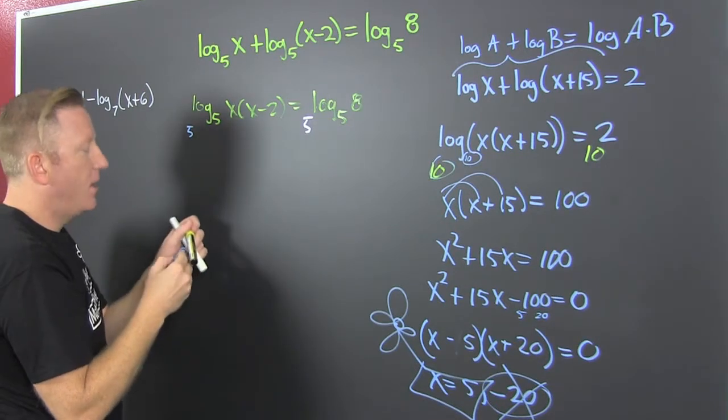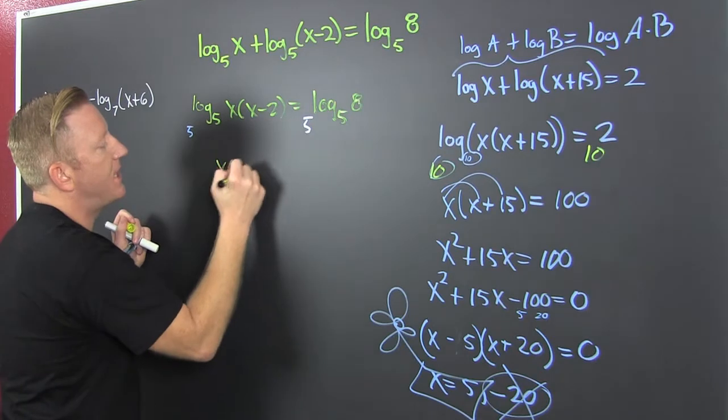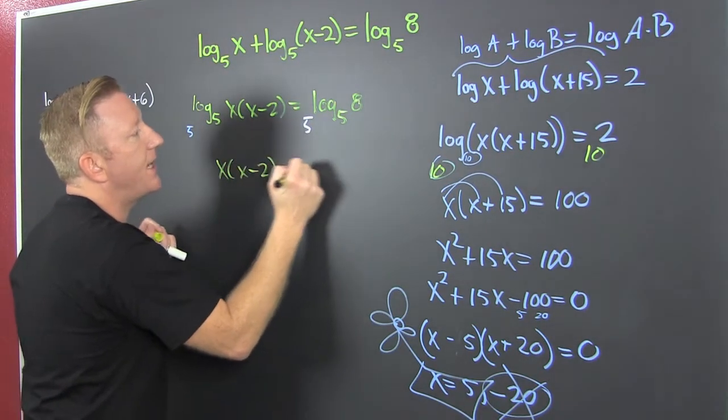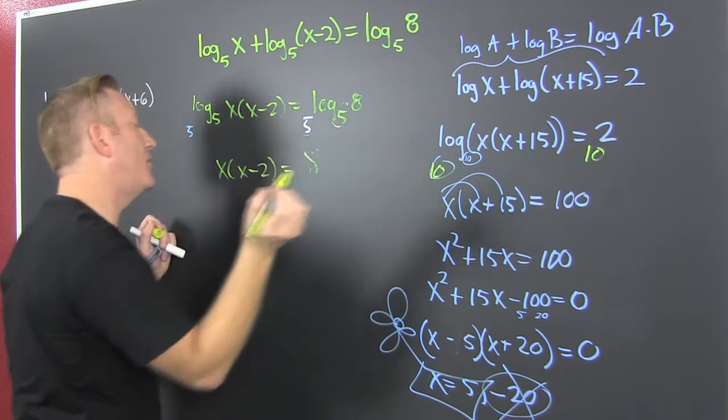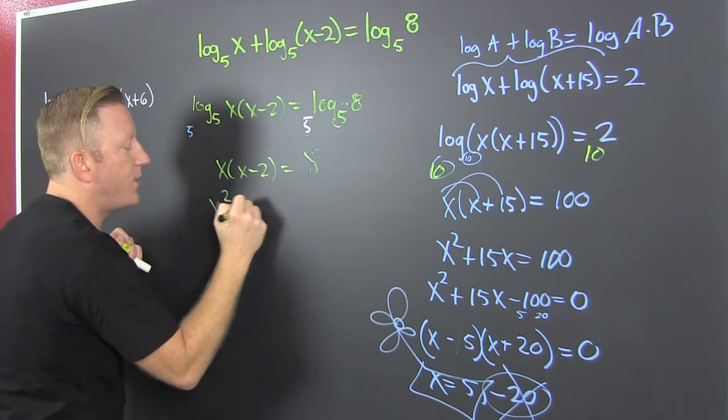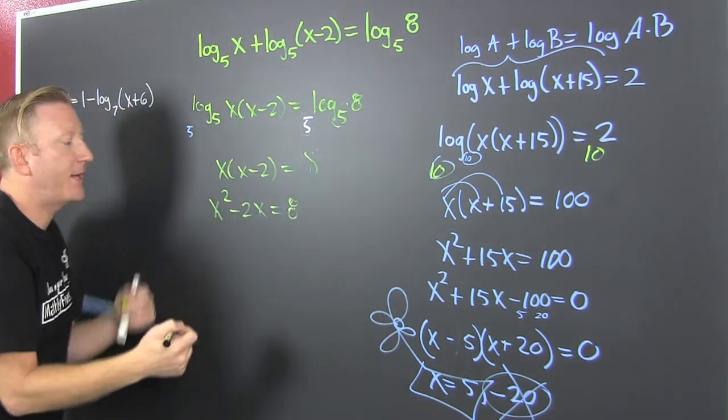And then what we have over here on this left side. Get in there. I have x times x minus deuce. These match. I get an 8. That's x squared minus 2x is 8. Back that math up.